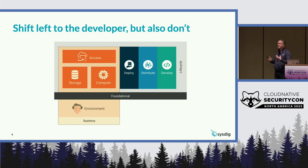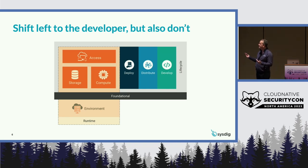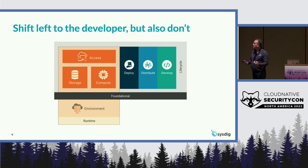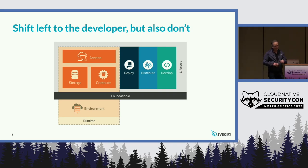In addition to the technology, we also want to make sure we cover the human elements in this panel. We hear a lot about the software supply chain. We know that we have to pay attention not just to what is actually running, but the whole lifecycle — deploy, distribute, develop. This is from the TAG Security report on cloud-native security, by the way.